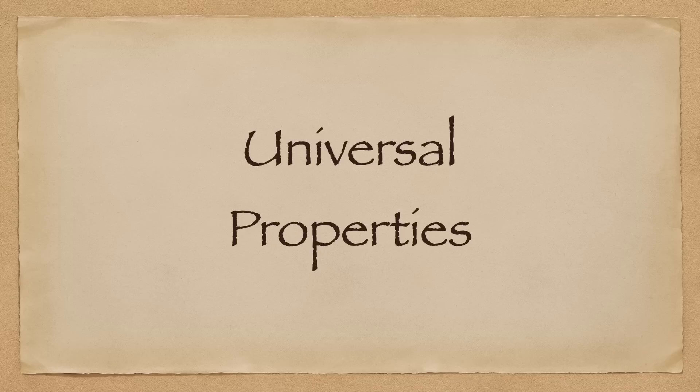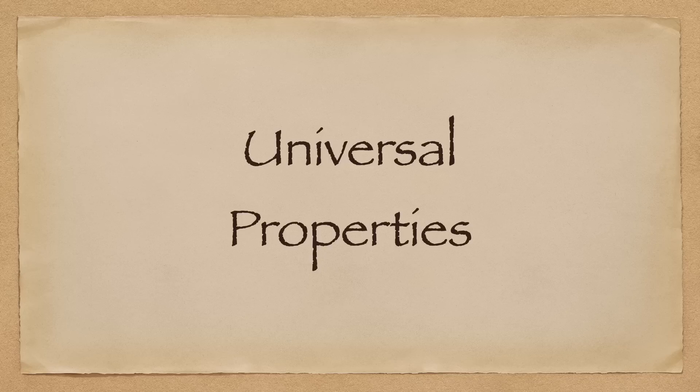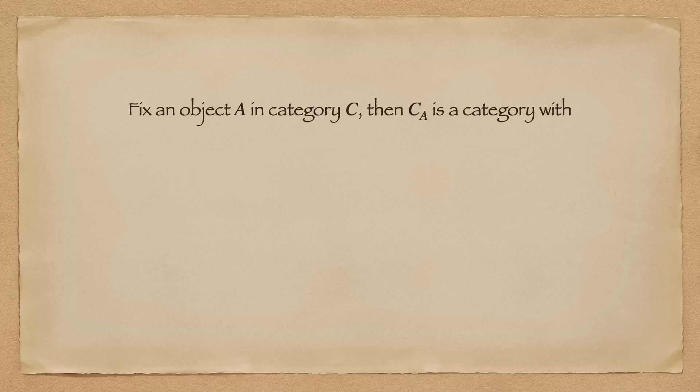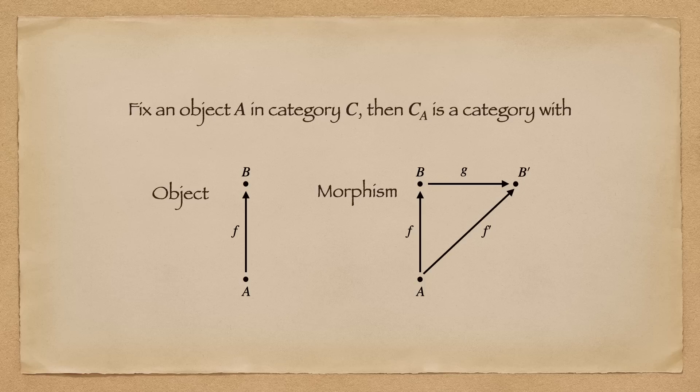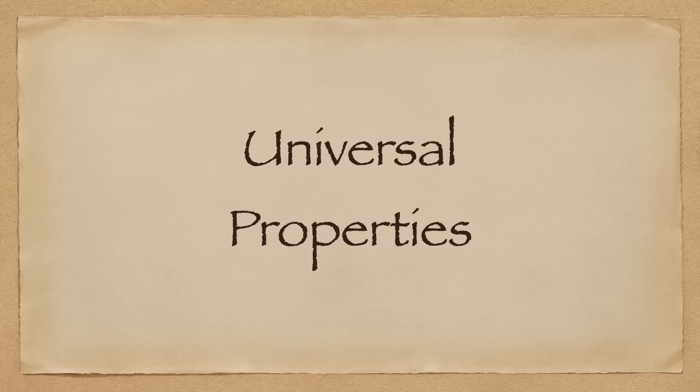So before talking about universal properties, we have to talk about diagram categories, a wonderful illustration of our abstract nonsense. Fix an object A in a category C. Then we define a category C sub A, whose objects are morphisms with source A, and whose morphisms are commutative diagrams of this form. And it can be easily verified that this is a category. This kind of diagram category is immensely important in talking about universal properties.